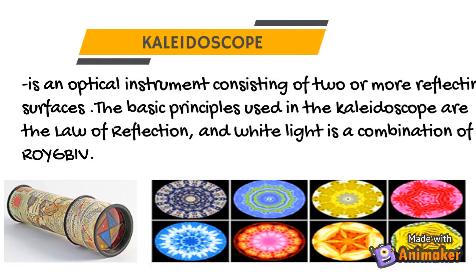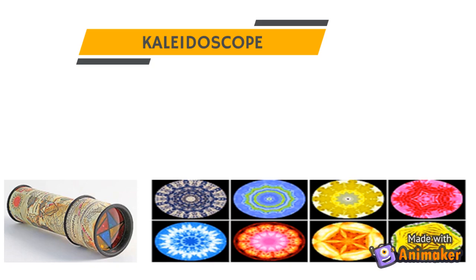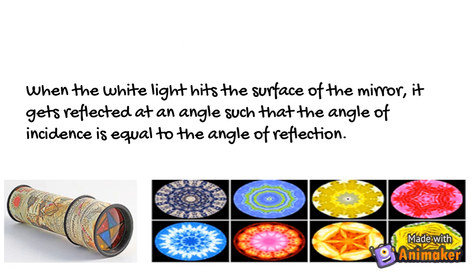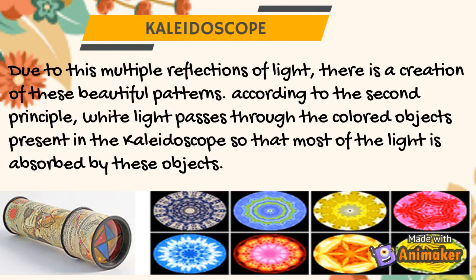Next, we have the kaleidoscope. It is an optical instrument consisting of two or more reflecting surfaces. The basic principles used are the law of reflection and the fact that white light is a combination of all colors. When white light hits the surface of the mirror, it gets reflected such that the angle of incidence equals the angle of reflection. Due to these multiple reflections, beautiful patterns are created. According to the second principle, white light passes through the colored objects in the kaleidoscope so that most of the light is absorbed by these objects.